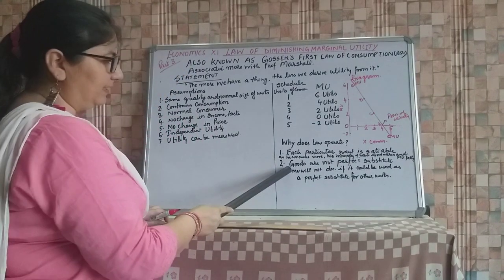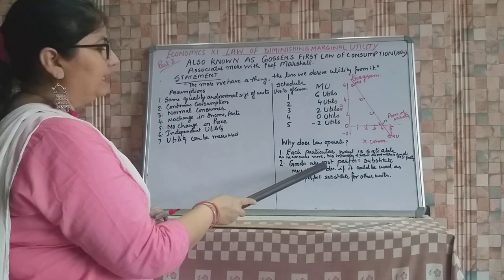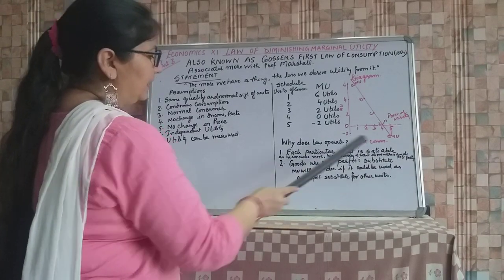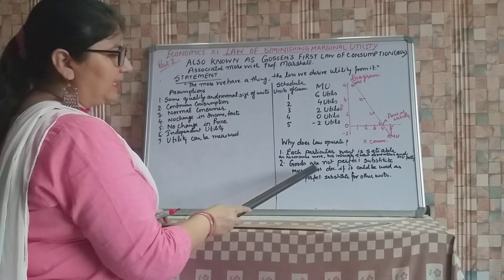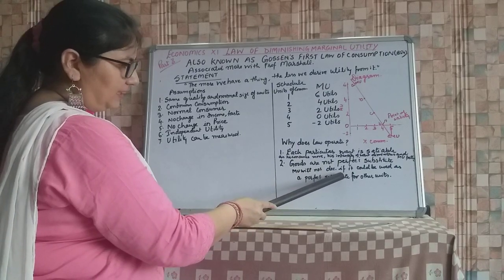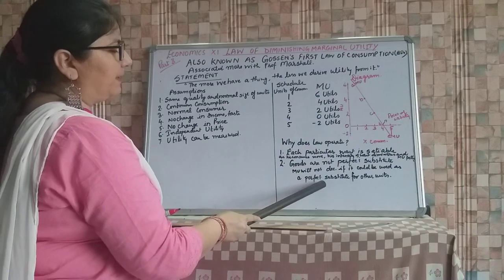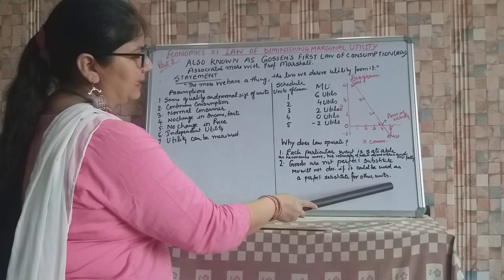Now the second reason for the operation of this law is goods are not perfect substitutes. Marginal utility will not decrease if it could be used as a perfect substitute for other units.